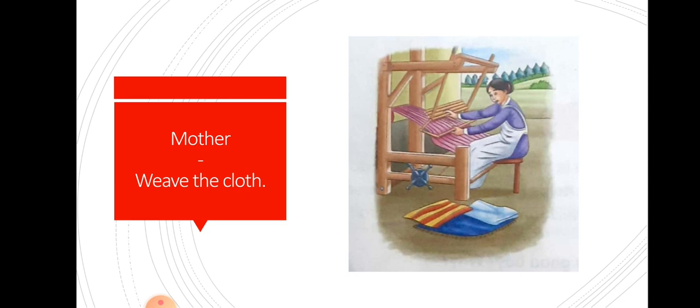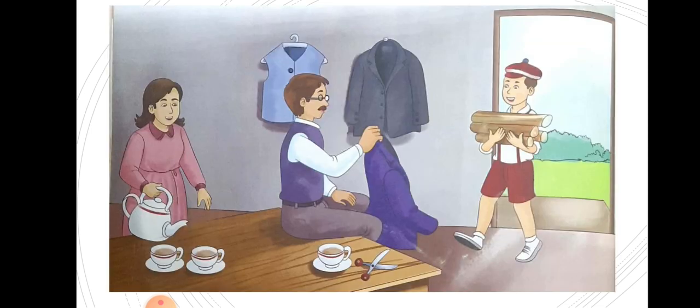Then Pelle went to the tailor and asked the tailor to make a suit out of this cloth. The tailor asked him to bring some wood and feed his goats. So Pelle, he took some oats and also gave food to the goats.